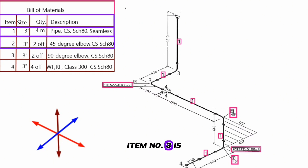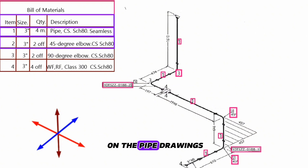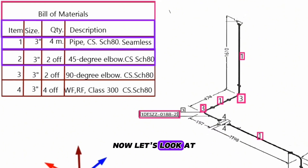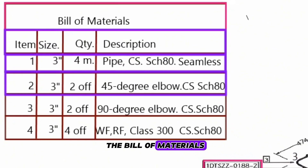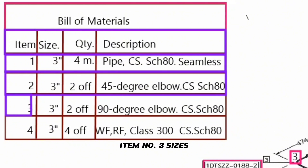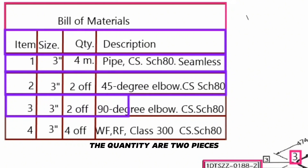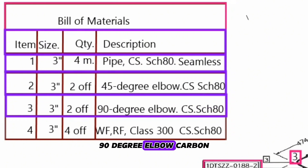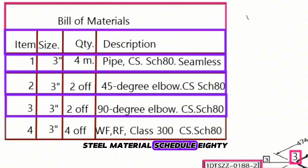Item number 3 is shown in four places on the pipe drawings. Let's look at the bill of materials.